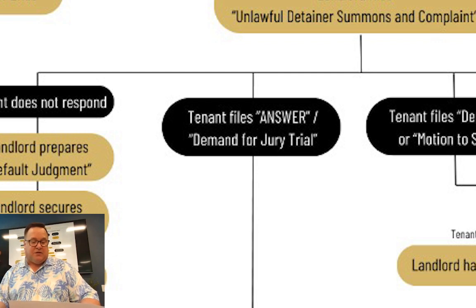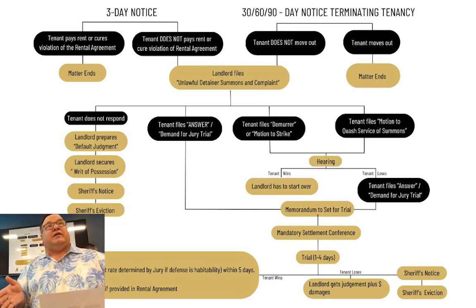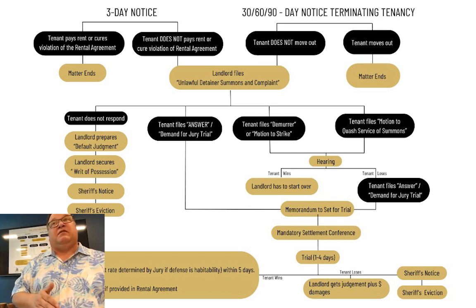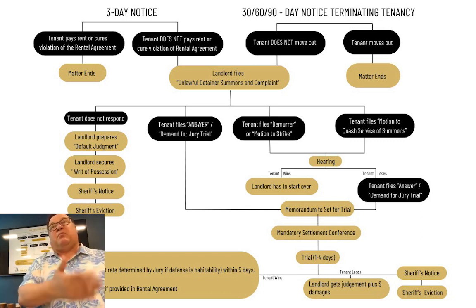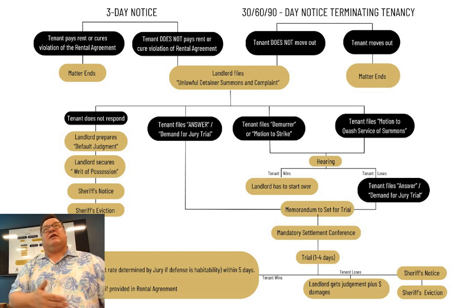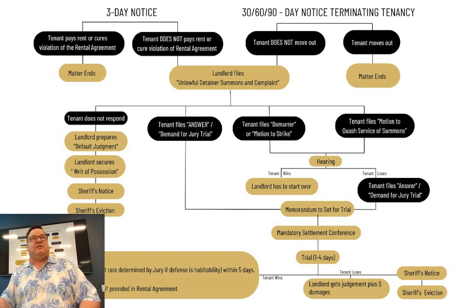Tenant files an answer and demand for a jury trial. For a little while there, that track was actually running faster than the default track, because the default side paperwork was backed up and they didn't have people processing it. A tenant would file a jury trial thinking they were slowing it down, but in reality that track was running on time.